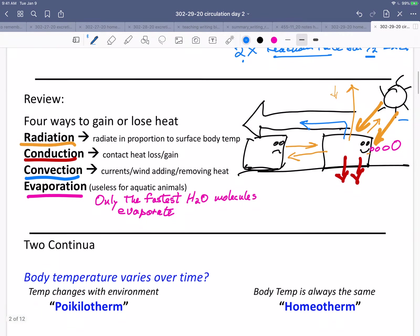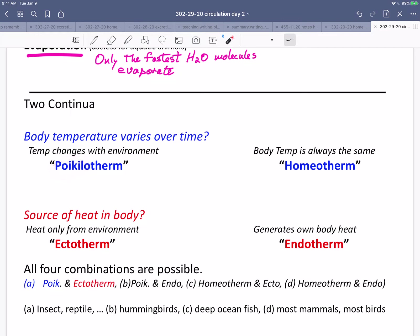Let's first look at body temperature varying over time. We talk about homeotherms, homeo meaning same. Body temperature is always the same. And we talk about poikilotherms, terrible term, but the body temperature changes with the environment. Poikilo is a root for changing and therm for temperature.